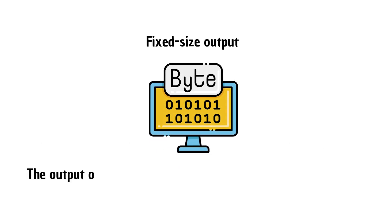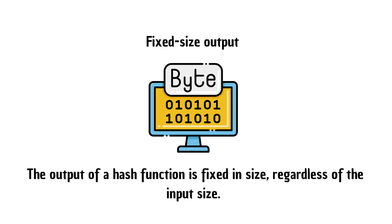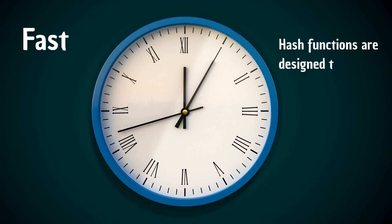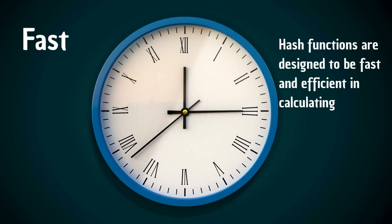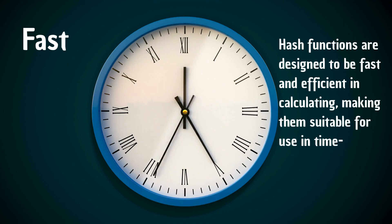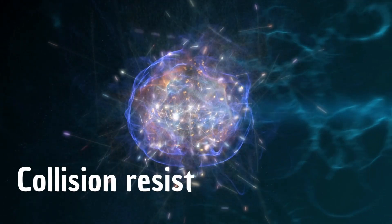Fixed size output, the output of a hash function is fixed in size, regardless of the size of the input. Fast, hash functions are designed to be fast and efficient in calculating, making them suitable for use in time-sensitive applications. And finally, collision-resistant, hash functions are designed to be collision-resistant, which means that it's nearly impossible to find two inputs that produce the same hash value.